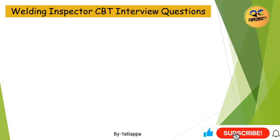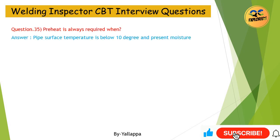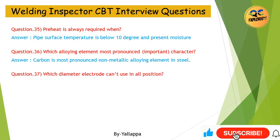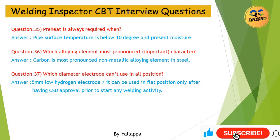Question 35: Preheat is always required when? Answer: Pipe surface temperature is below 10°C or in the presence of moisture. Question 36: Which alloying element has the most pronounced character? Answer: Carbon is the most pronounced non-metallic alloying element in steel. Question 37: Which diameter electrode cannot be used in all positions? Answer: 5 mm low hydrogen electrode — it can be used in the flat position only, after CSD approval prior to starting any welding activity.